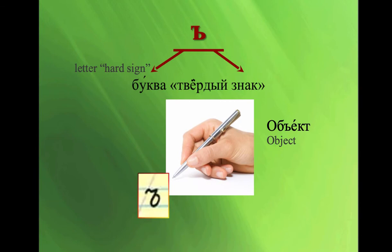Letter hard sign. Буква твердый знак. There's no uppercase for this letter and there's no word beginning with this letter. And there is no sound for this letter either. The purpose of this letter is to make the consonant before it sound hard or create a small pause. For example, объект, object.